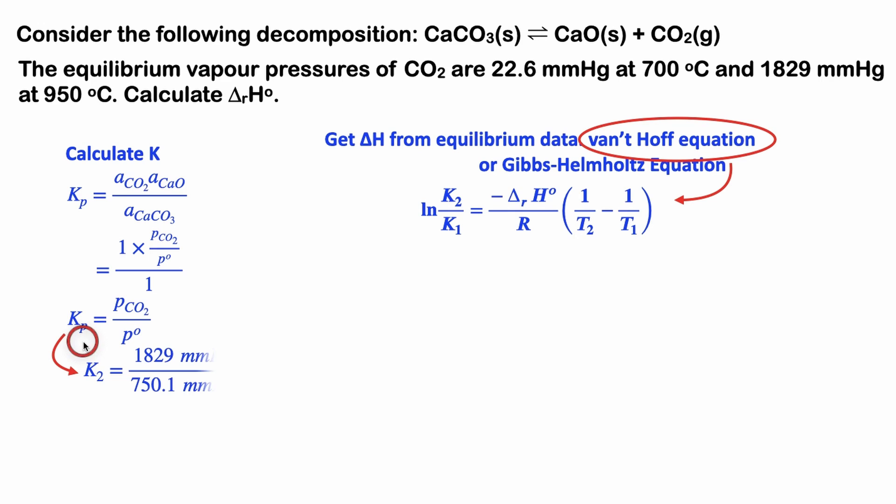To solve for the equilibrium constant when the pressure is 1829 mmHg, we take that pressure divided by standard pressure. Standard pressure is one bar, or 750.1 mmHg. If we calculate this, we get an equilibrium constant of 2.438.